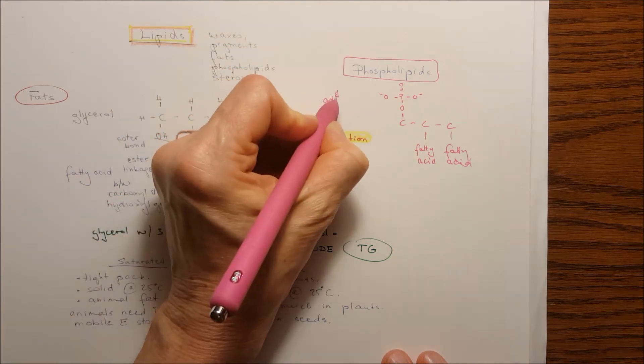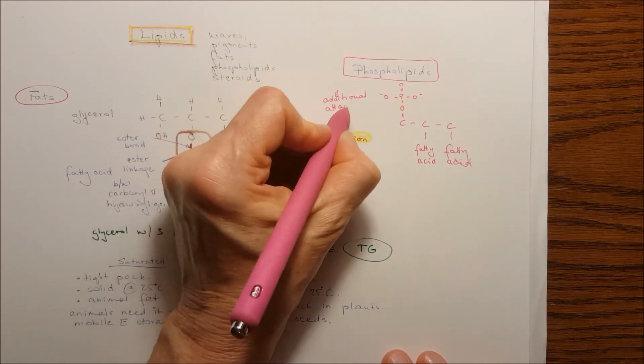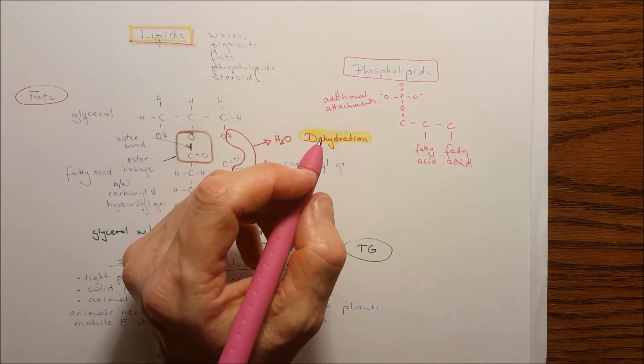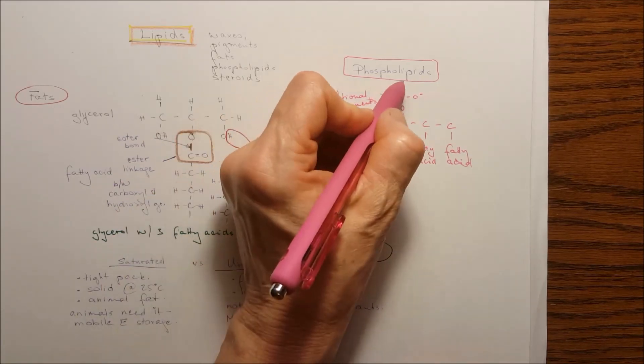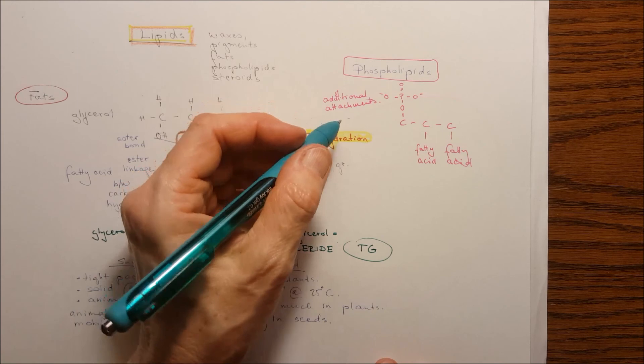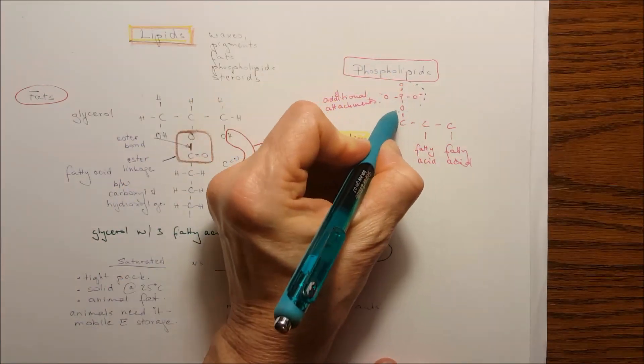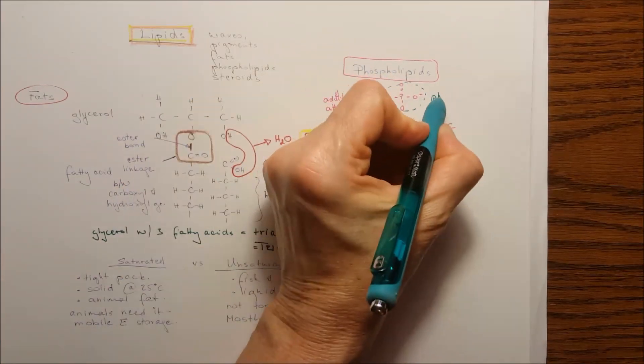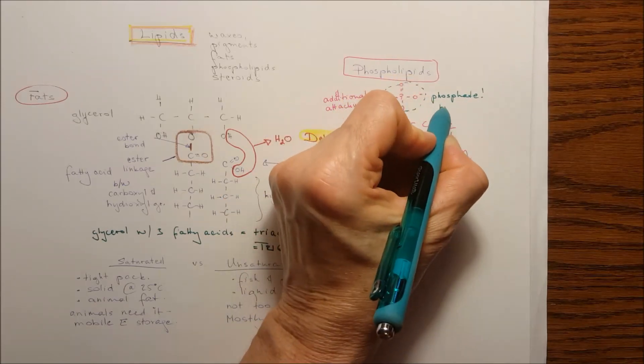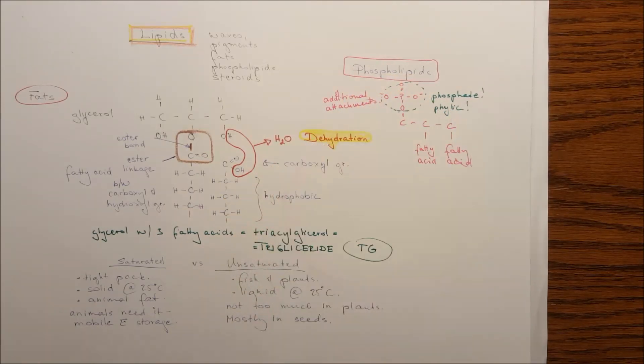And also additional attachments can happen to the phosphate. So that attachment, additional attachment as well as the phosphate group is hydrophilic. So it's a polar hydrophilic. So it's going to be able to dissolve or just mix with water.